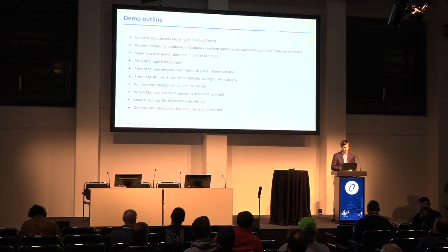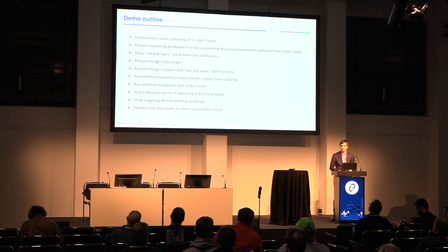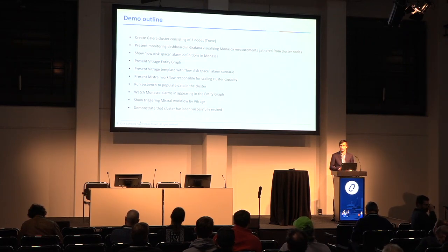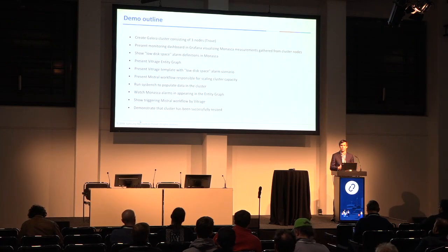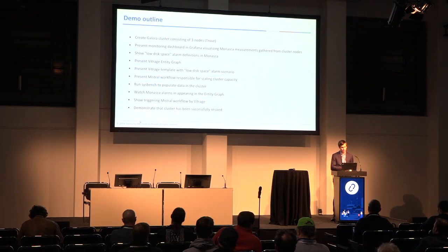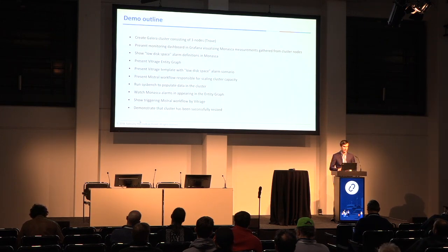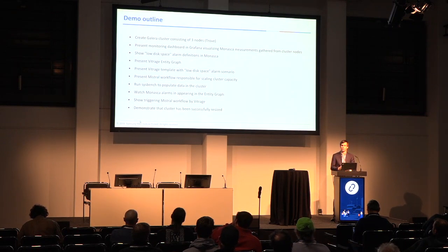Now it's time for the demo. This is a complicated demo, so I hope everything will work. First we will create a Galera cluster of three nodes via Trove. Then I'll present a monitoring dashboard in Grafana visualizing measurements from cluster nodes, show low disk space alert definitions in Monasca, present the Vitrage entity graph with Trove entities, show the Vitrage template with the low disk space alarm scenario, show the Mistral workflow for scaling cluster capacity, run sysbench to populate data, and when the cluster is overloaded we'll see Monasca alerts emitted and the Mistral workflow triggered by Vitrage.